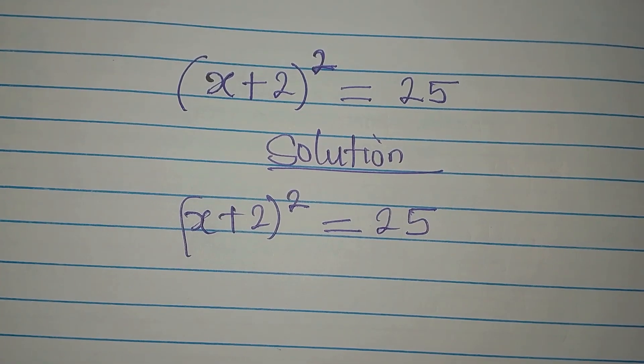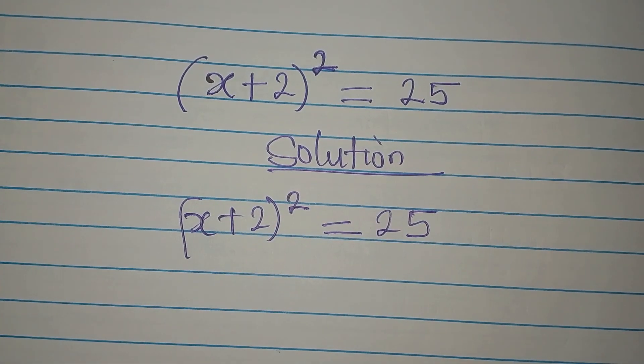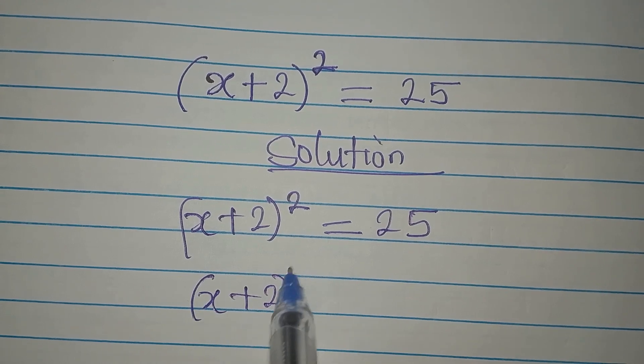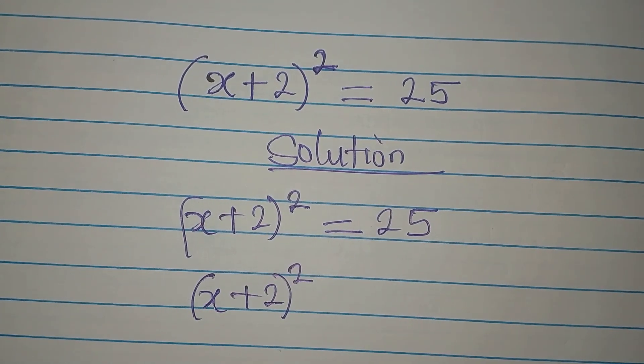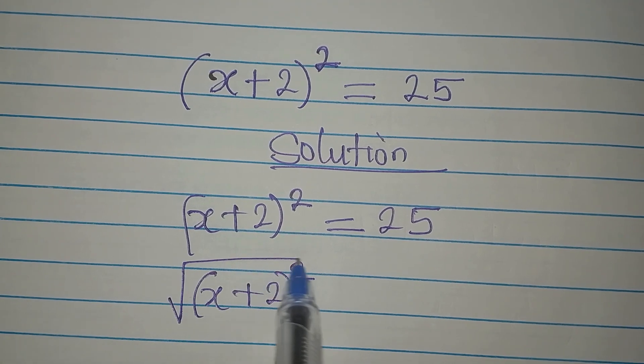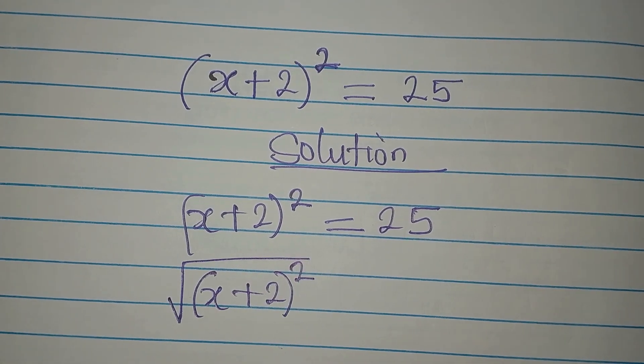The first target is to remove the square from here. We have x plus 2 squared, right? I wanted to remove the square, so because of that, I can take the square root of both sides.